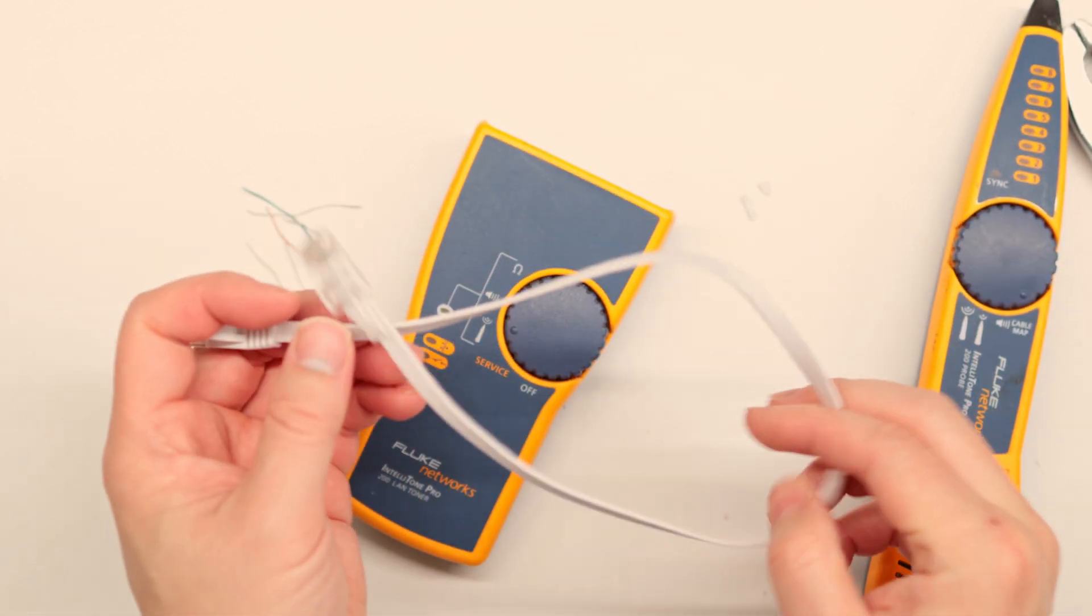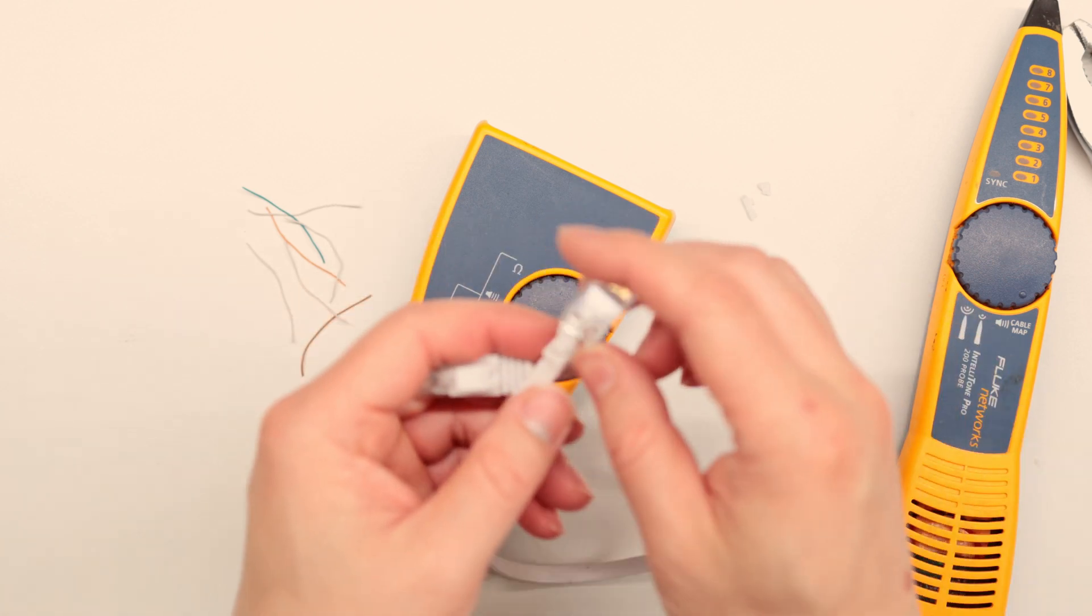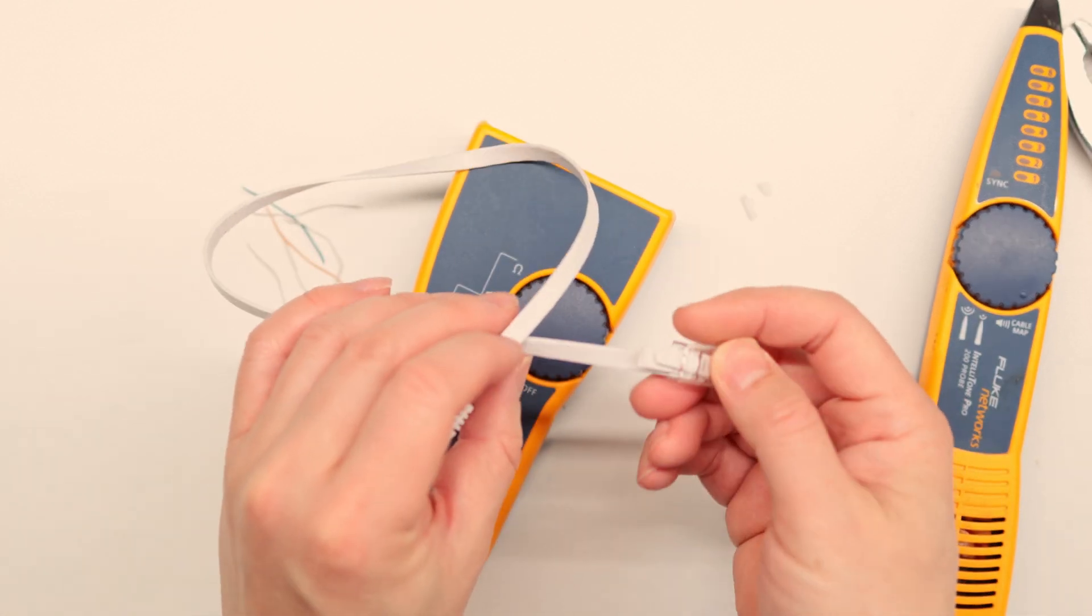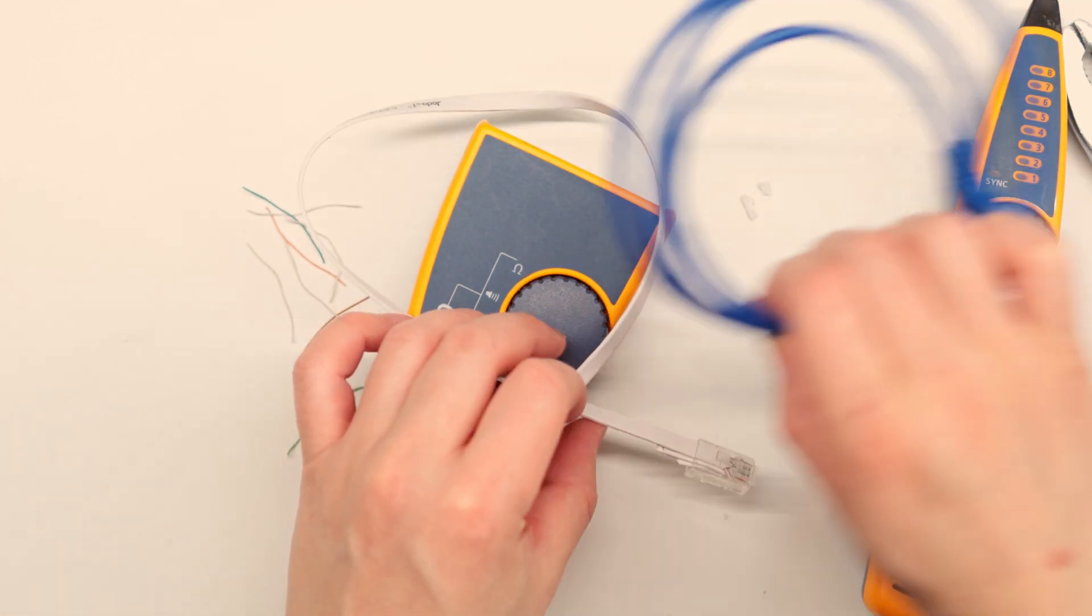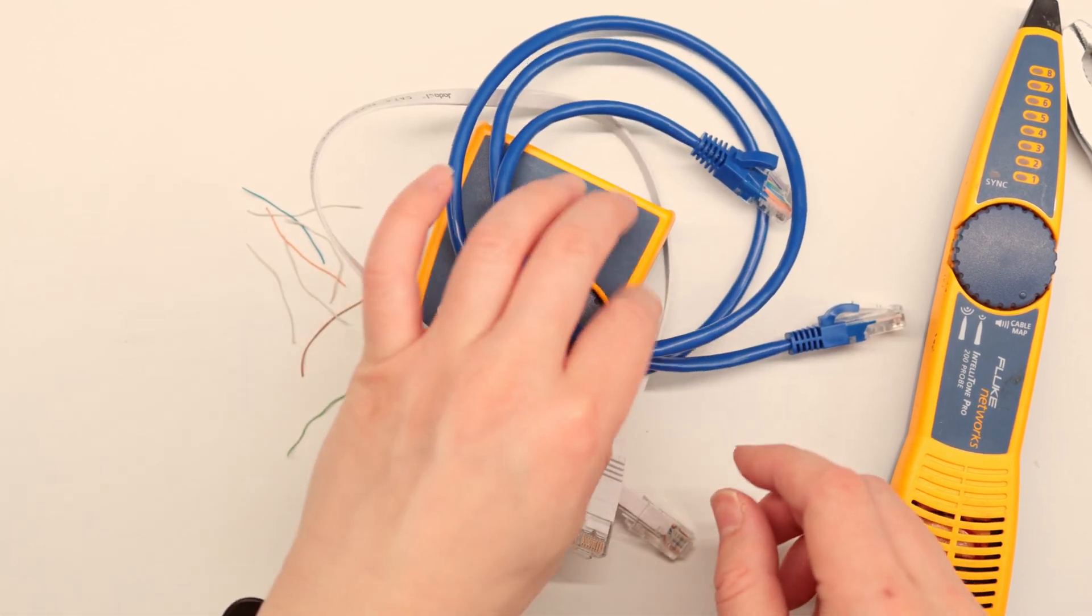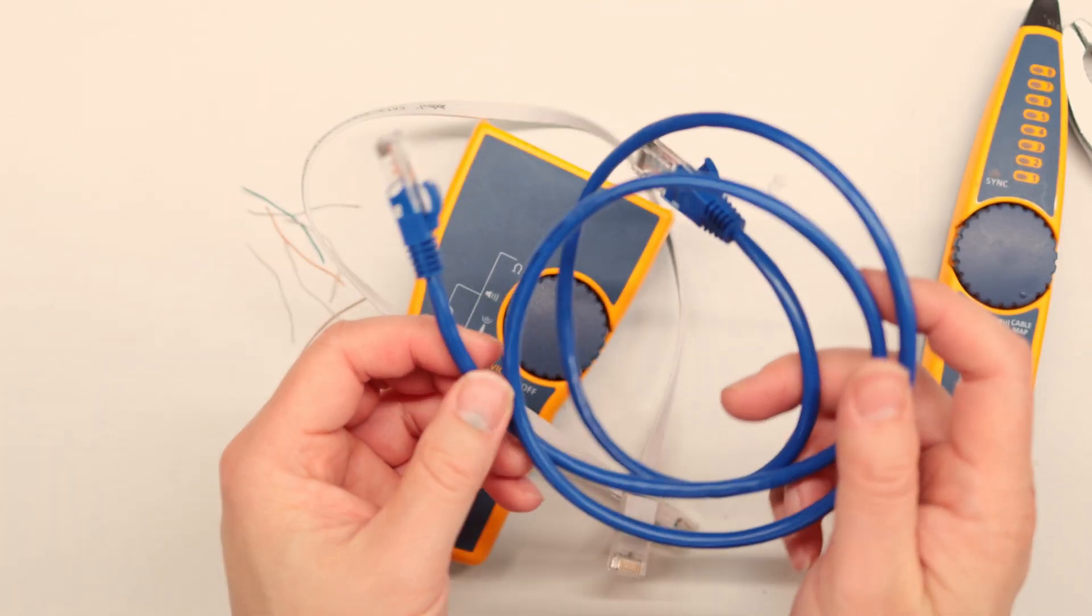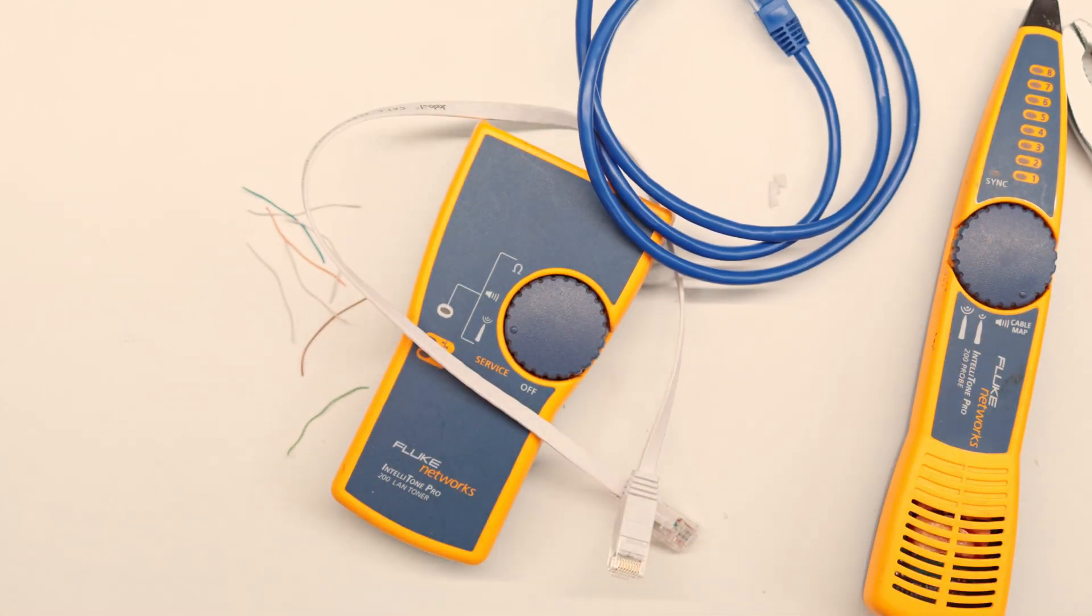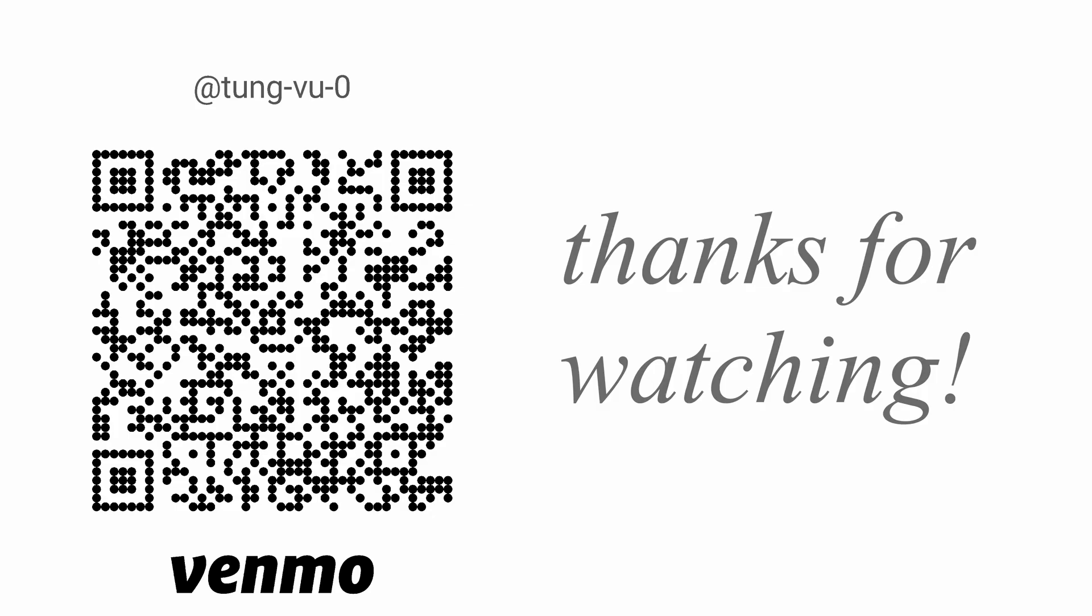Hopefully this video helps you on how to terminate flat ethernet cable. The same process can be used on a regular cable as well. Everything that I did earlier can be done on the regular round ethernet cable. I really appreciate you guys subscribing to my channel, liking this video, and thanks for watching.